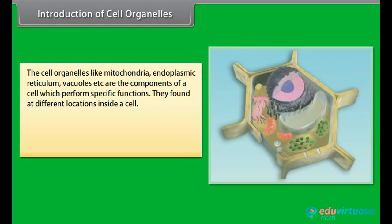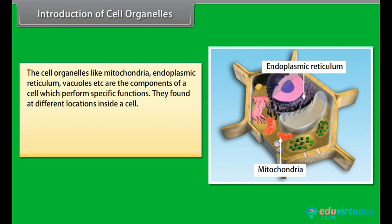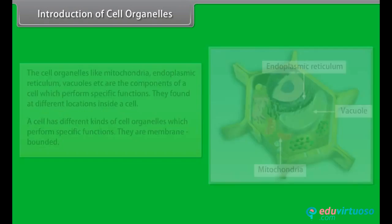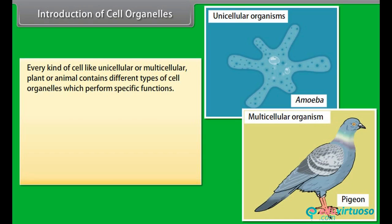Cell organelles like mitochondria, endoplasmic reticulum, vacuoles, etc. are the components of a cell which perform specific functions. They are found at different locations inside a cell. Every kind of cell — unicellular or multicellular, plant or animal — contains different types of cell organelles which perform specific functions.